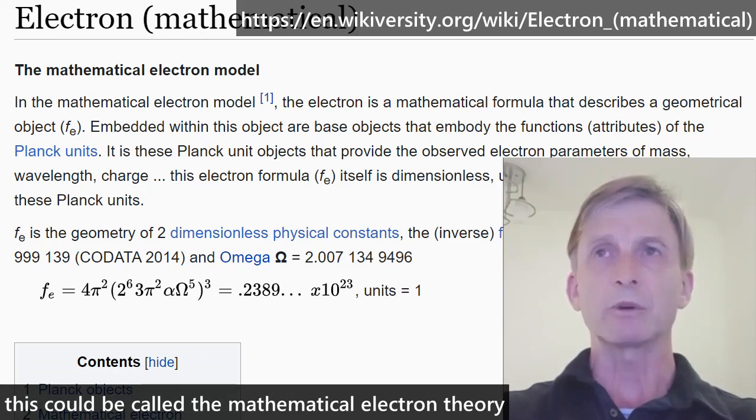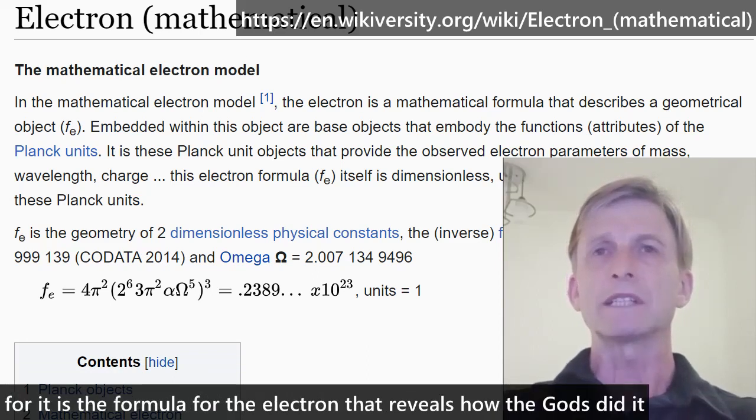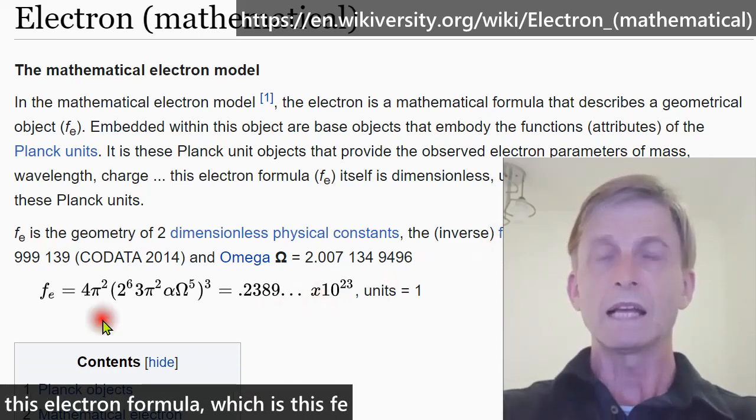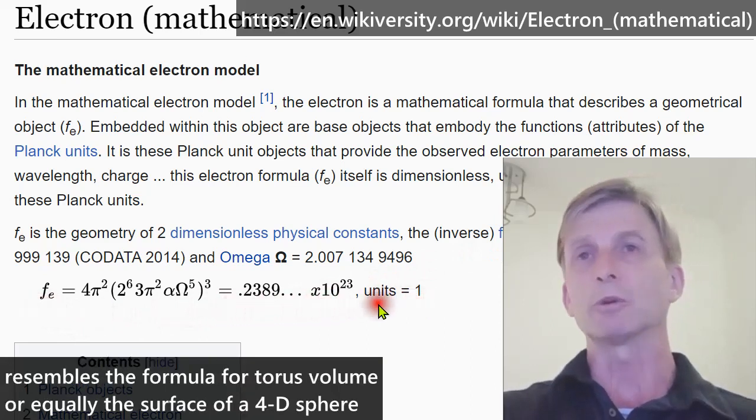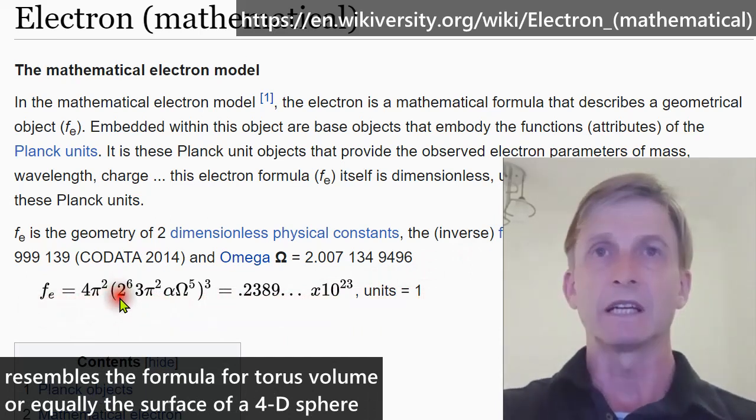This could be called the mathematical electron theory, for although it is the formula for the electron that reveals how the gods did it. This electron formula, which is this Fe, resembles the formula for torus volume or equally the surface of a 4D sphere.